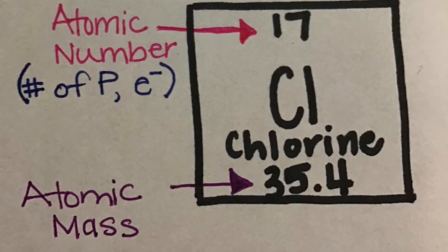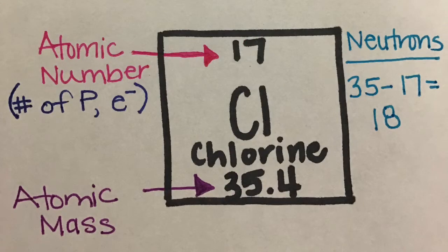Finding neutrons is slightly more difficult. Here we take the atomic mass, the number at the bottom, minus the number of protons, the number at the top. Chlorine has an atomic mass of 35.4 that we will round to 35 because nobody likes decimals. That means we have 35 minus 17 which equals 18 neutrons.